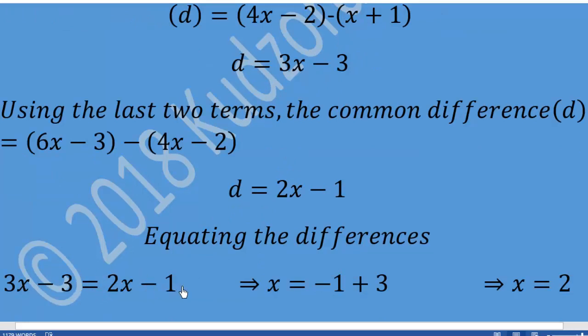We equate 3x-3 equal to 2x-1. Grouping like terms, we obtain x equal to negative 1 plus 3, which implies that x is equal to 2.